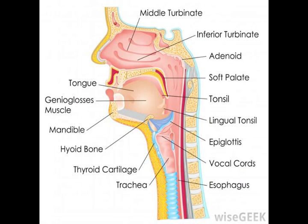The mandibular condyle provides the surface necessary for the articular disc to accomplish this function. The mandibular condyle also assists in the attachment of the temporomandibular ligament. Also known as the external lateral ligament, it comprises two thin and short fasciculi. These fiber bundles that comprise the temporomandibular ligament are attached to the lower jaw via the neck of the condyloid process, more specifically at the neck's lateral surface and rear border.